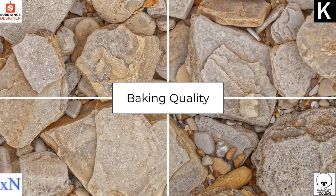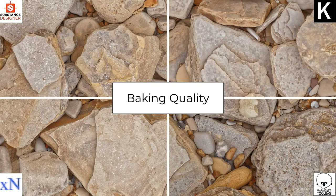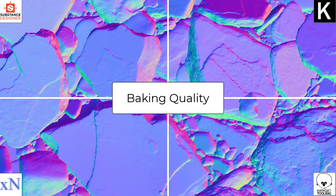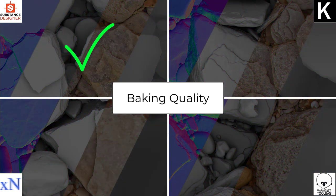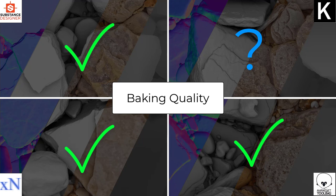No matter how quick the baking or what file formats are supported, if the quality is poor the baker is useless. Baking quality is the key and most important factor. I don't mind waiting an extra hour if the quality justifies it. Fortunately, each baker in this comparison delivered roughly the same very high quality results. Knalt was a small exception — the current version lacks texture-based color transfer — but since that's just one update away, I'd say it's fine for now, and after that update Knalt could be one of the best bakers on the market.